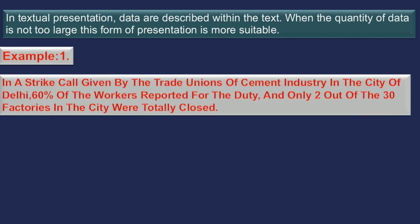In a strike call given by the trade union of cement industry in the city of Delhi, 60% of the workers reported for duty and only 2 out of the 30 factories in the city were totally closed.